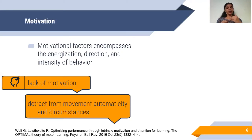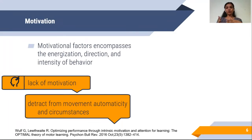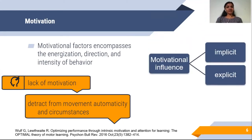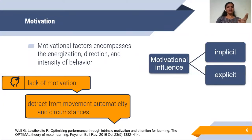If the patient or any normal subject has the motivation to perform or learn a particular task, they are able to learn it more efficiently and can reproduce it more efficiently. If the patient has a lack of motivation, it can distract from movement, automaticity, and circumstances. Motivation is divided into two parts: implicit and explicit. Implicit motivation is slow and taken by conscious thinking, while explicit motivation is generally fast and unconsciously taken. Both have a role in learning.